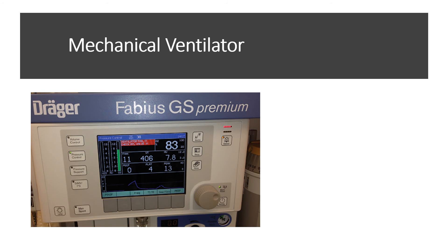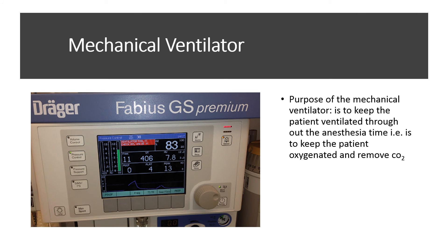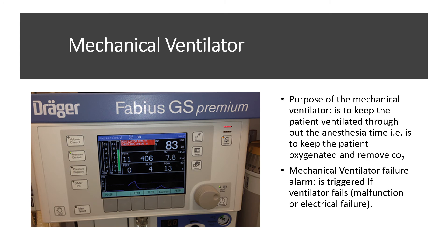The second major element is the mechanical ventilator. Its purpose is to keep the patient ventilated throughout the anesthesia time — that is, to keep the patient oxygenated and to remove carbon dioxide. The mechanical ventilator also has a failure alarm that is triggered if the ventilator stops due to malfunction or electric power failure, to alert the doctor to take the proper action.